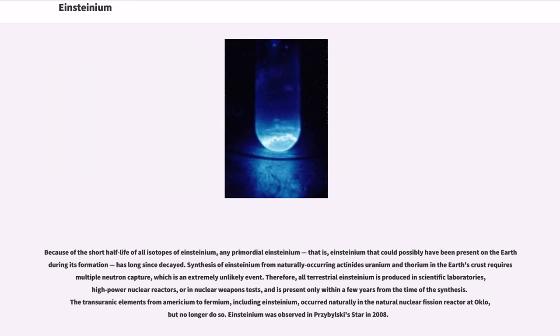Because of the short half-life of all isotopes of Einsteinium, any primordial Einsteinium, that is, Einsteinium that could possibly have been present on the Earth during its formation, has long since decayed. Synthesis of Einsteinium from naturally occurring actinides uranium and thorium in the Earth's crust requires multiple neutron capture, which is an extremely unlikely event. Therefore, all terrestrial Einsteinium is produced in scientific laboratories, high-power nuclear reactors, or in nuclear weapons tests, and is present only within a few years from the time of the synthesis. The transuranic elements from americium to fermium, including Einsteinium, occurred naturally in the natural nuclear fission reactor at Oklo, but no longer do so. Einsteinium was observed in Przybylski's star in 2008.